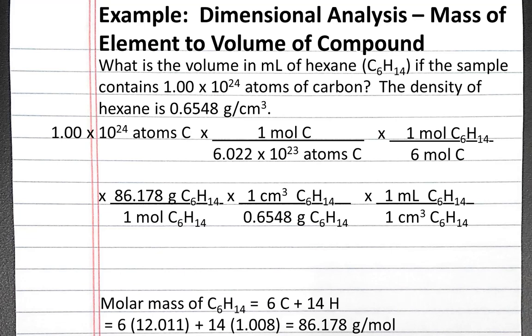Now the units should cancel so that we end up with milliliters of hexane. Putting this into our calculator, we should get 36.4 milliliters of hexane.